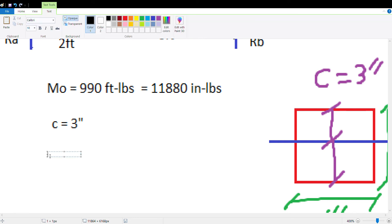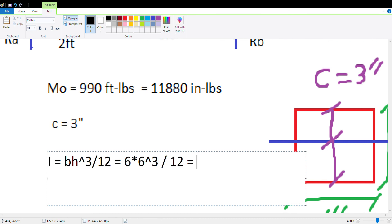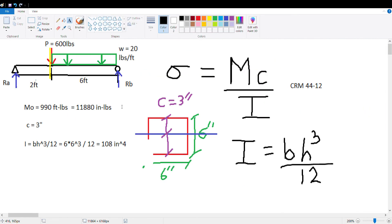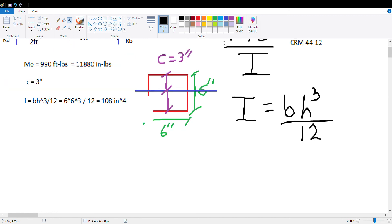Hope you guys are following and know what I'm talking about, because if you don't then you got to do some studying. So we have the C and we also have, now we're going to solve for the I. So I equals bh cubed divided by 12. Let's make this longer. Remember the b is six inches, right? The height is also six inches cubed, and we'll divide that by 12 and we get 108 inches to the fourth. That is your unit for moment of inertia.